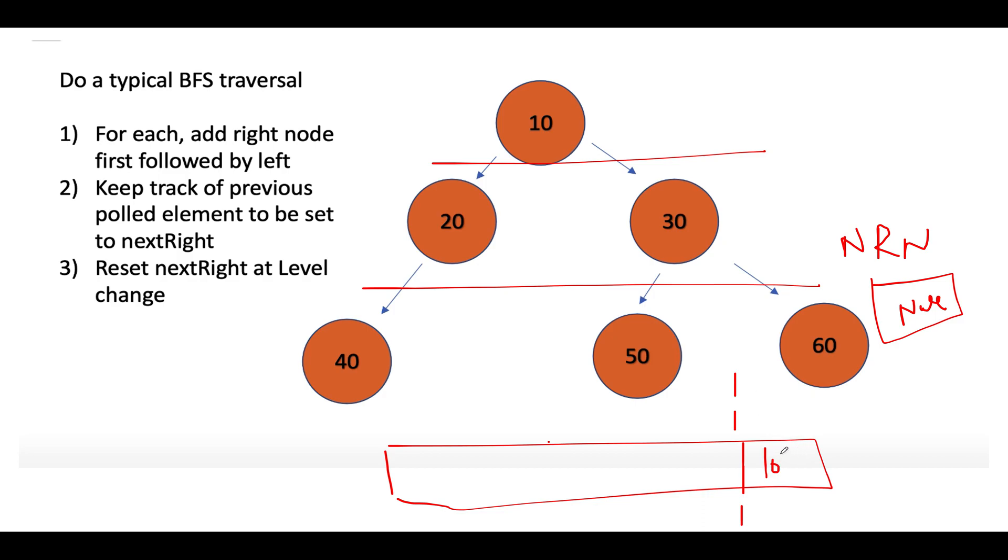So let's continue the BFS traversal and pull this element out. So 10 gets pulled out, 10 is gone. 10's right will point to next right element, next right node that we have created, so it will point to null. So let's update it to null. And along with this, we'll simply add 10's children into the queue. So the first thing that we are going to add is the right child. So 30 gets added first. Remember, we'll be adding the right child first, followed by the left one, followed by 20.